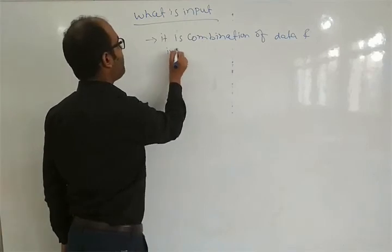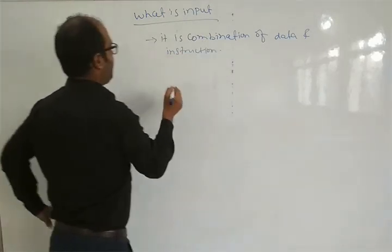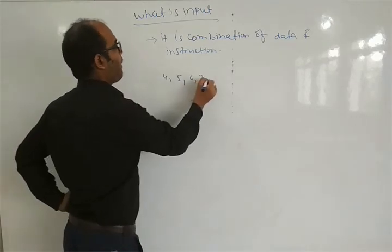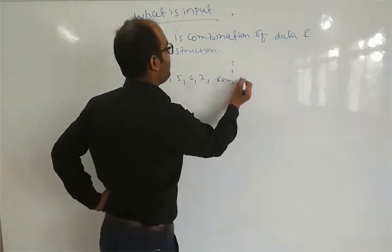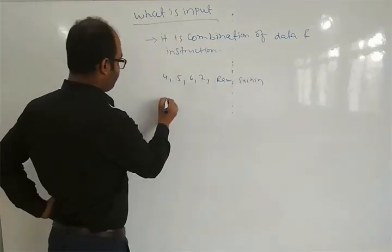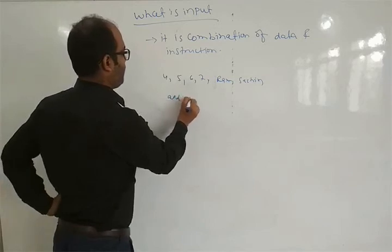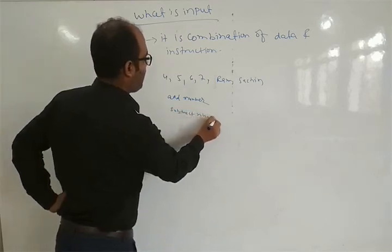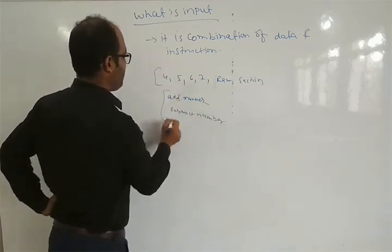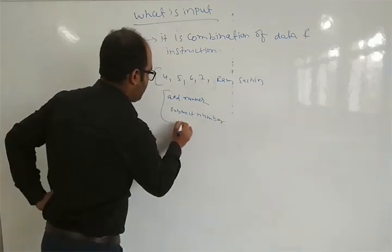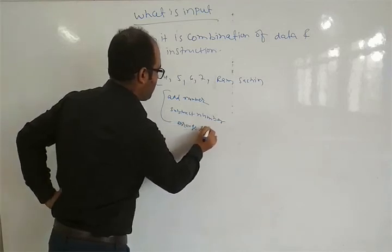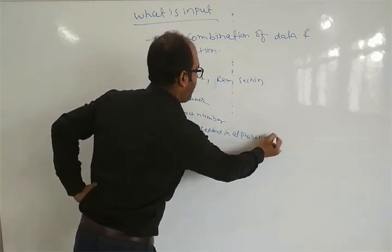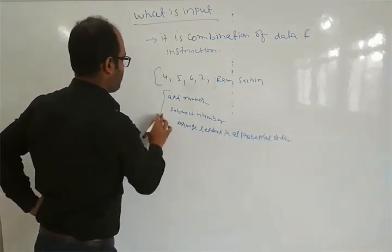So suppose 4, 5, 6, 7 — these are data. 'Add numbers' or 'subtract numbers' — these are instructions. This is data and this is instruction. For example, 'arrange letters in alphabetical order' — this is one instruction.